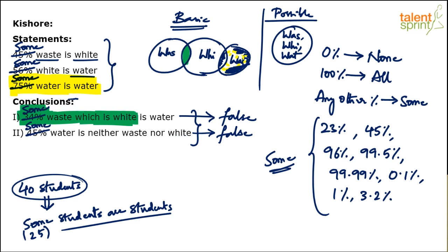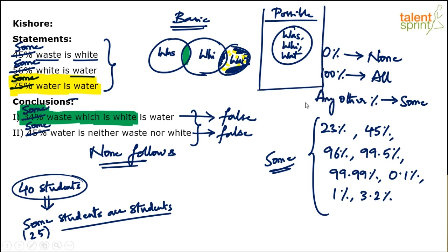Hence the second conclusion is also false. Overall, neither conclusion one nor conclusion two follows — none of these conclusions follow. There are other possible diagrams that can also prove the second conclusion wrong. Don't think Venn diagrams are lengthy — in fact this is the easiest way to solve syllogism questions. Just draw the basic diagram, verify conclusions with it. If a conclusion does not satisfy the basic diagram, it is straight away false. If it does satisfy the basic diagram, then you need to deal with possible diagrams as well.